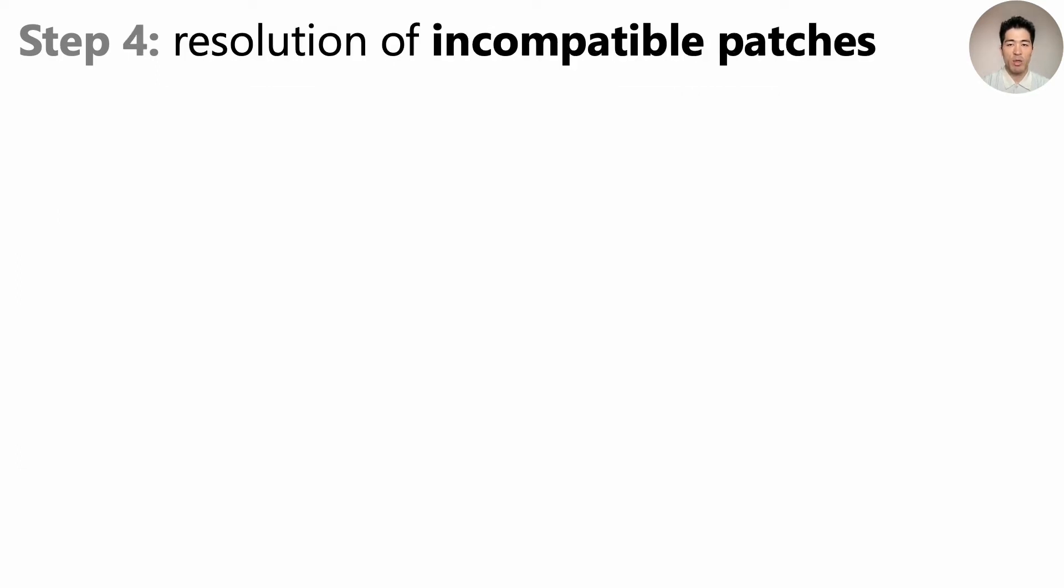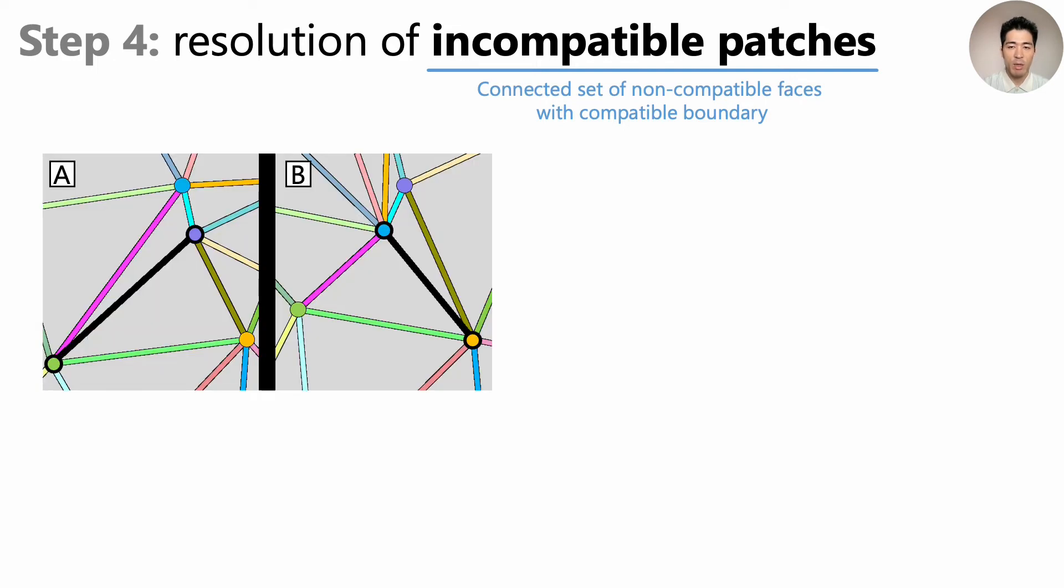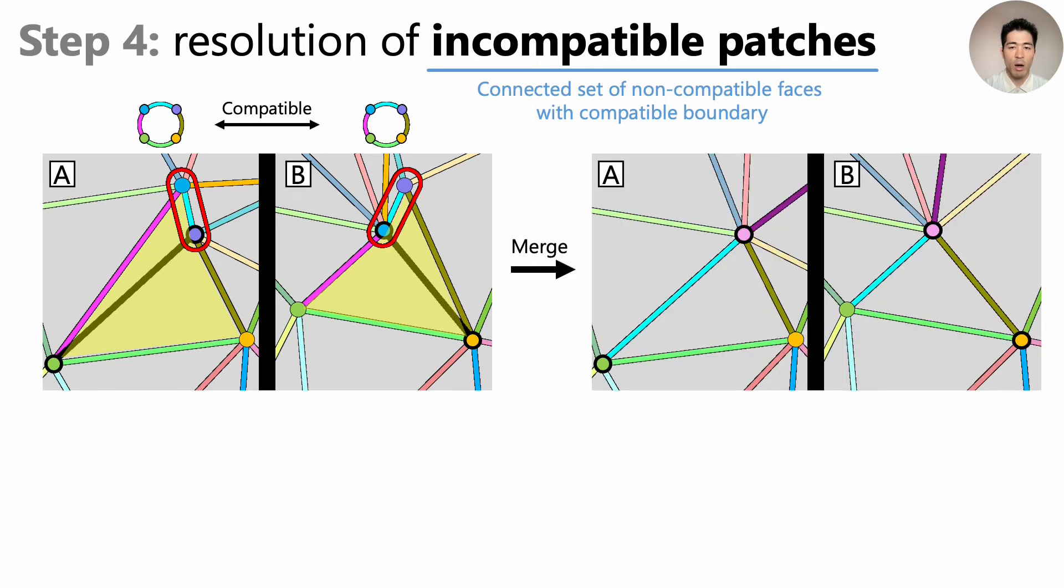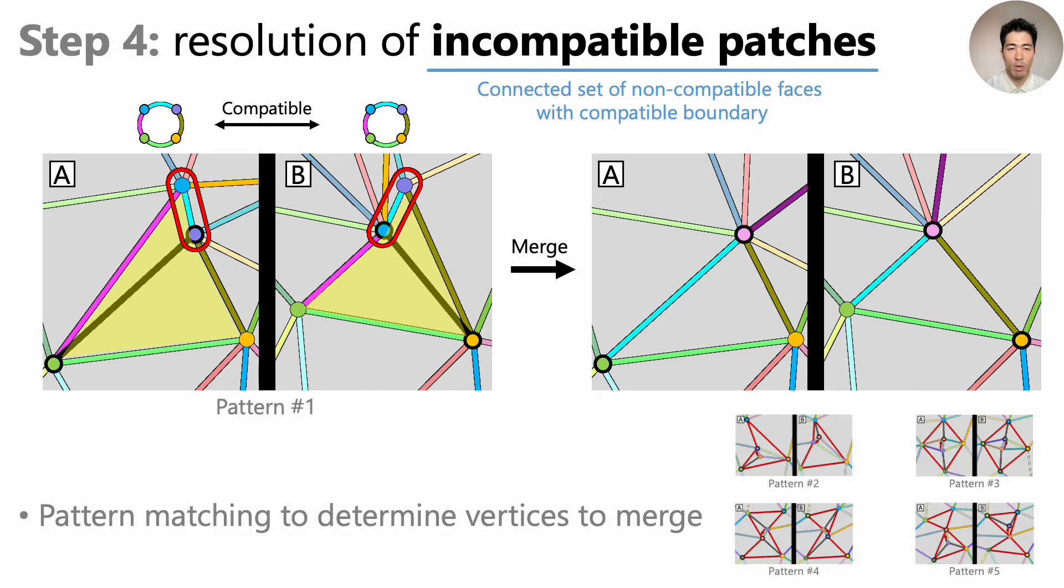Our step 4 is resolution of incompatible patches. An incompatible patch is a connected set of non-compatible faces with a compatible boundary. Here's an example. On A and B, the two triangles adjacent to these incompatible edges form incompatible patches because their boundaries are compatible. Our basic strategy is to merge some vertices to make the patches compatible. We perform simple pattern matching to determine which vertices to merge. We designed five such patterns as detailed in the paper.